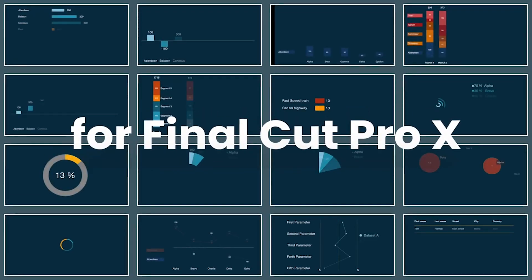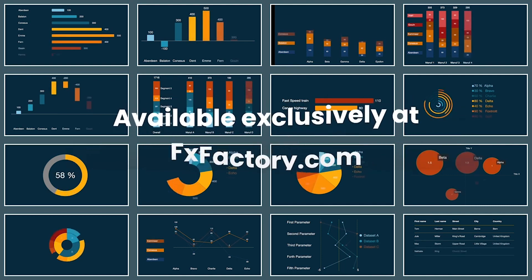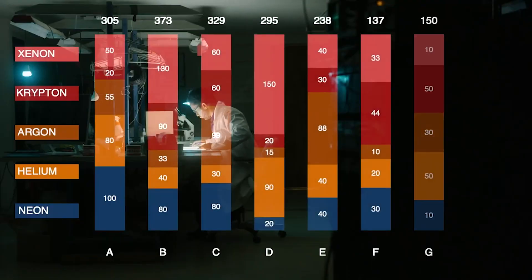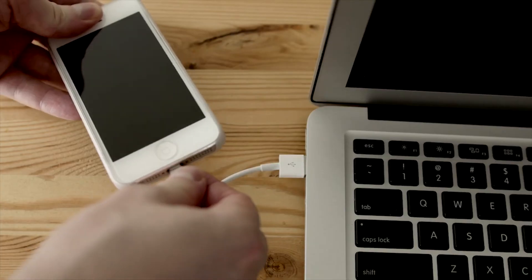Reckon Charts is a set of professionally designed and animated advanced infographic plugins for Final Cut Pro. With Reckon Charts, you can make all sorts of different types of animated charts.